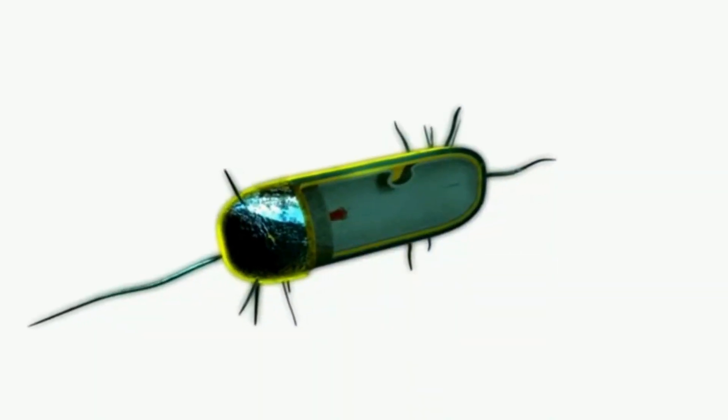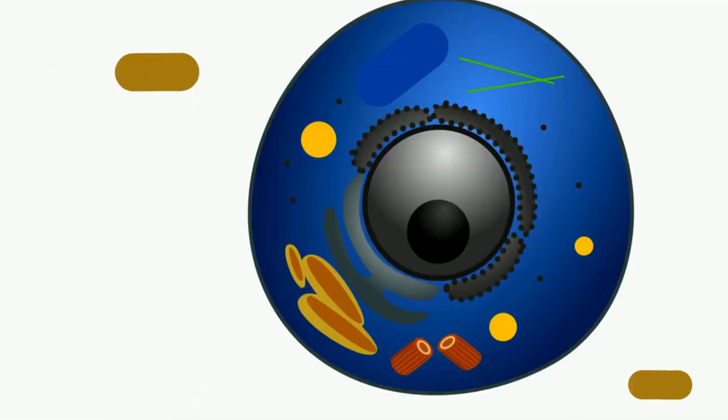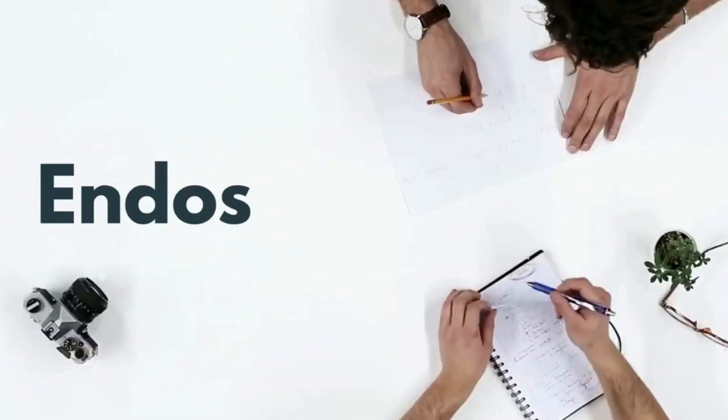Mitochondria are very similar to some bacteria. For this reason, some scientists think they may have originally been bacteria that were absorbed by more complex cells. This theory is called endosymbiosis.